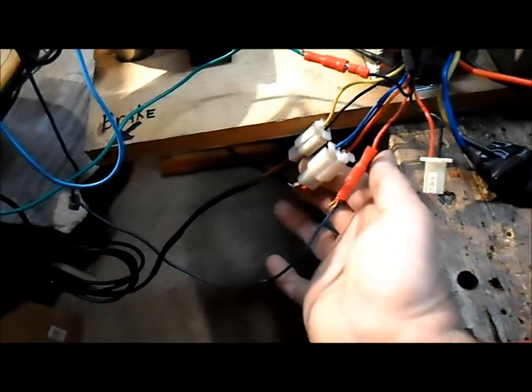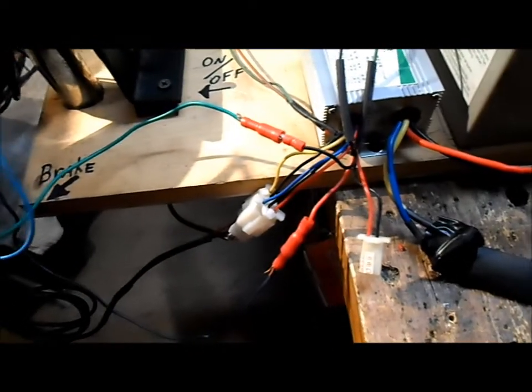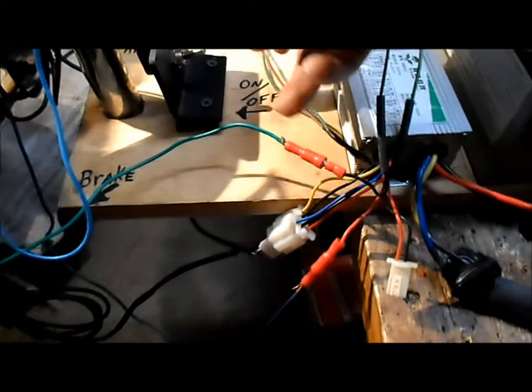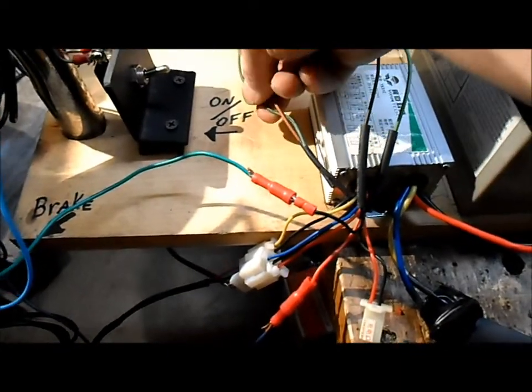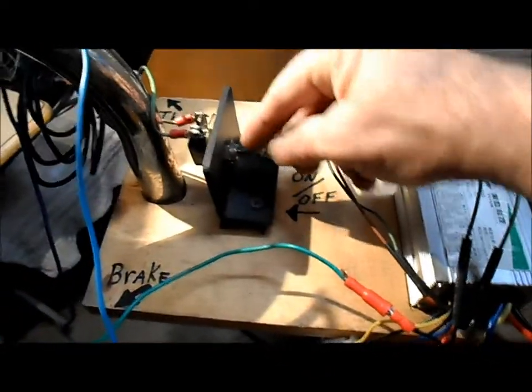The three wire connection here is for our throttle and these two connections here, the last ones are the key switch for our on off switch.